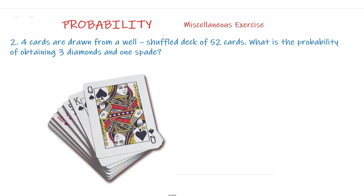Four cards are drawn from a well-shuffled deck of 52 cards. What is the probability of obtaining three diamonds and one spade?